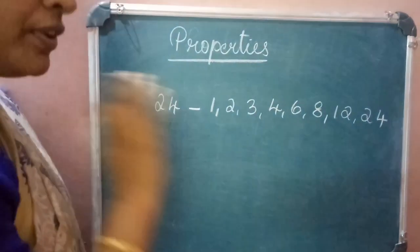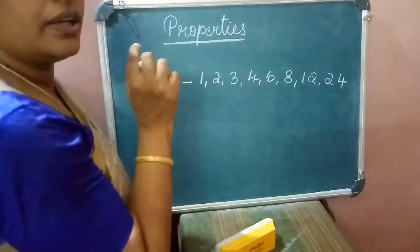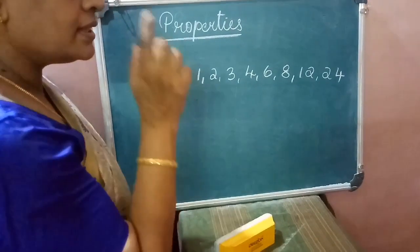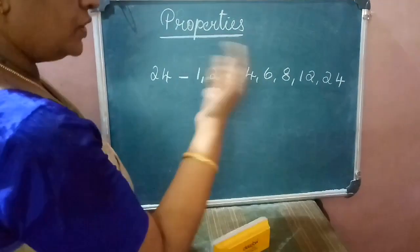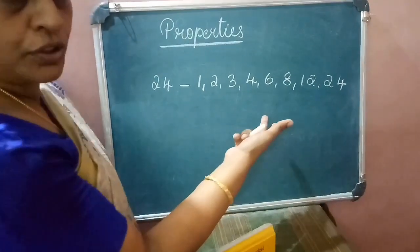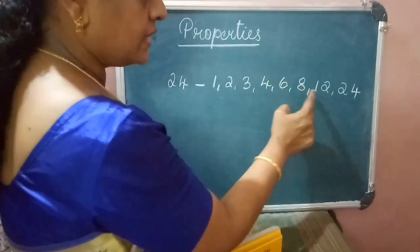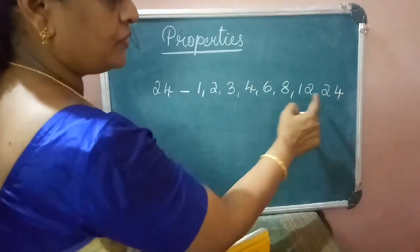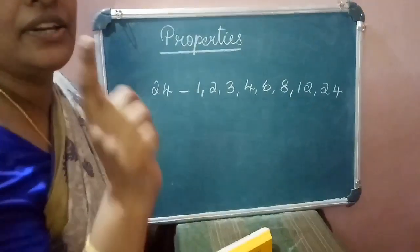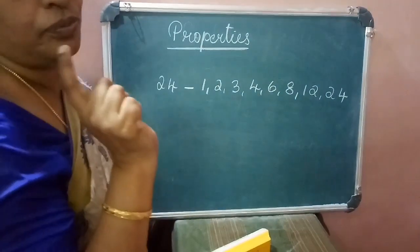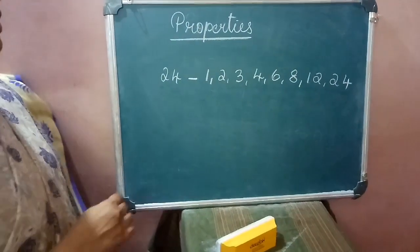The fourth property: the number of factors of a given number is finite, meaning countable. For 24, counting the factors — 1, 2, 3, 4, 6, 8, 12, 24 — there are 8 factors. So the number of factors of any given number is always finite.